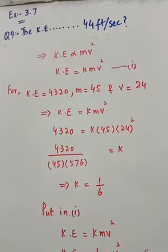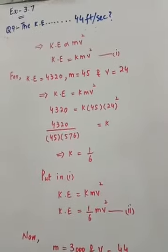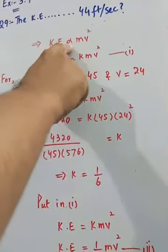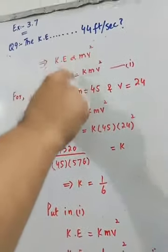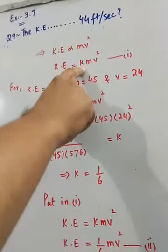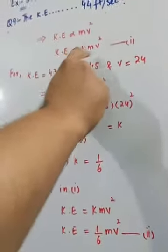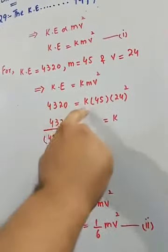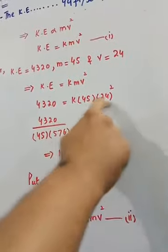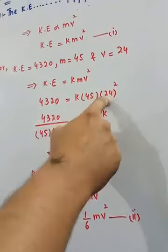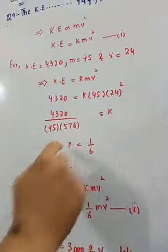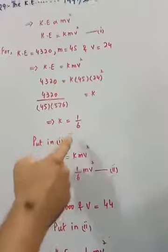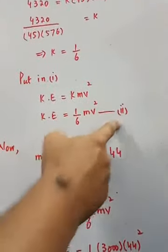Kinetic energy is directly proportional to mv². Replace proportionality with equals and k constant: KE = kmv², this is equation 1. From the first set given, find the value of k. Put the values here. 24 squared means 24 times 24, which divides here. The value of k will be 1/6. Now put k value in equation 1 to get equation 2.